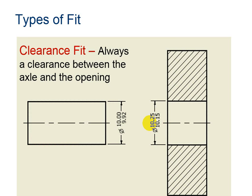Here is an example of a clearance fit between the axle and the opening. The maximum size of the axle is 10 and the minimum size of the hole is 10.15. If these parts are manufactured correctly there will always be a clearance between these two parts when the axle is inserted through the hole.